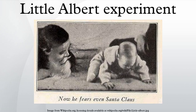Voluntary consent, as we understand the term today, was not possible to give or to withhold, they wrote. Presumably, most parents, if given a choice, would not allow their babies to participate in an experiment in which researchers plan to terrify them. In 2009, psychologists Hall P. Beck and Sharman Levinson published an article claiming to have discovered the true identity of Albert B. After reviewing Watson's correspondence and publications, as well as research in public documents, Beck argued that Albert B. was a pseudonym for Douglas Merritte, the son of Arvilla Merritte, a woman who appears to have been a wet nurse at the Harriet Lane Home. Recent research has shown, however, that Douglas Merritte may not have been Little Albert.